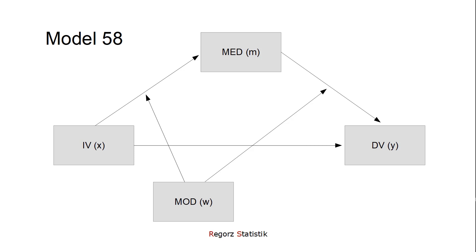In this video, I'm going to show you how to run and interpret a moderated mediation with process model 58 or 59. That is a moderated mediation where one moderator moderates the A path and the B path.